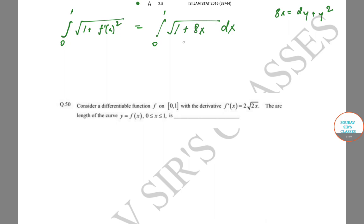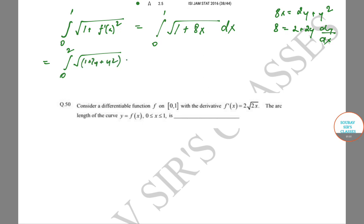Differentiating 8x = 2y + y² gives 8 = (2 + 2y)(dy/dx). For the limits: when x = 0, y = 0; and when x = 1, we have y² + 2y = 1, giving y = 1 (taking positive root, but here y = 2 — let's verify). So √(1 + 8x) becomes √(1 + 2y + y²), and we substitute (2 + 2y)/8 dy for dx.